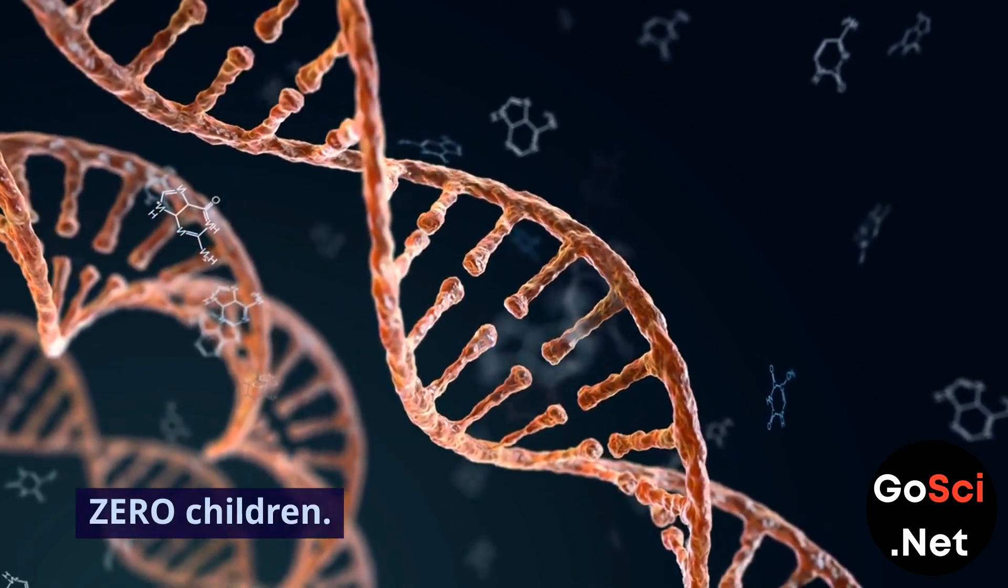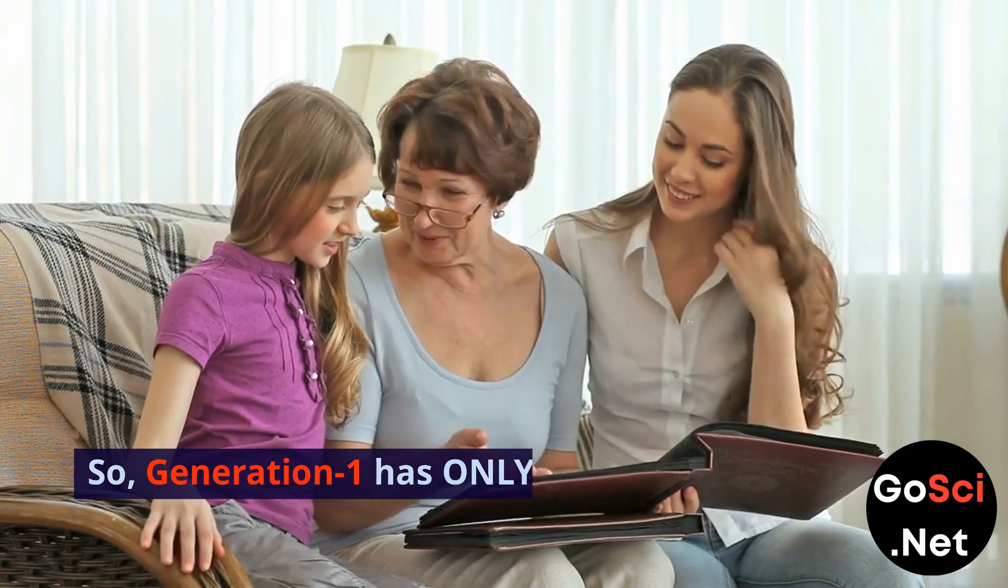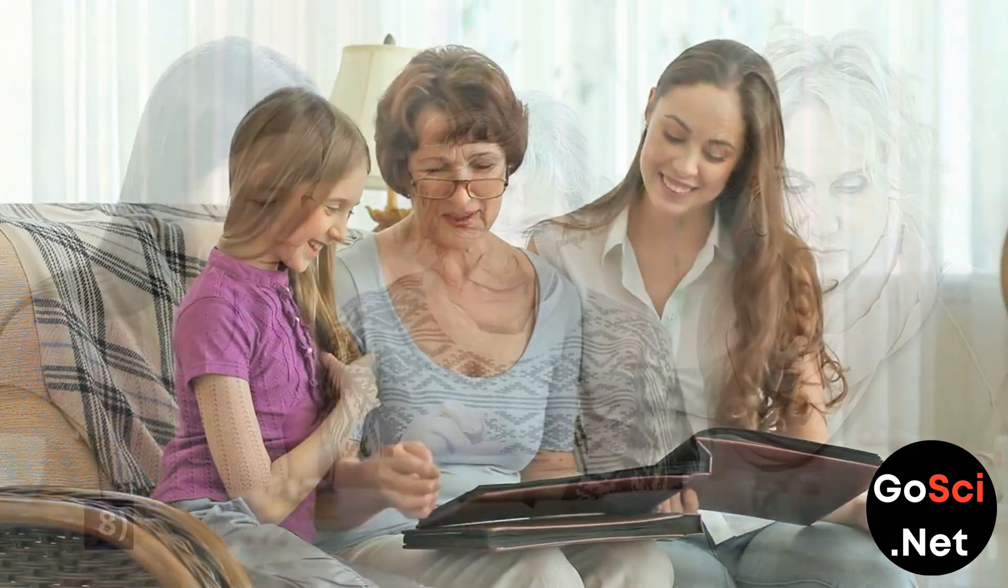Adults with the bad mutation have 0 children. Only 1 adult has the good mutation. So Generation 1 has only 2 children in the whole population.